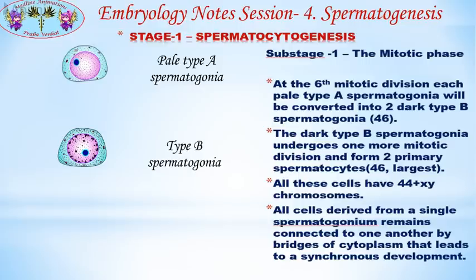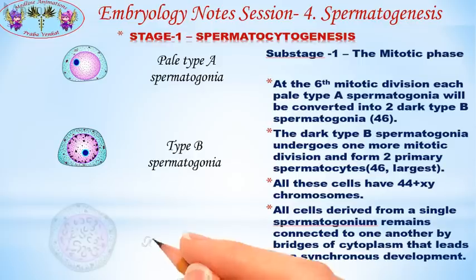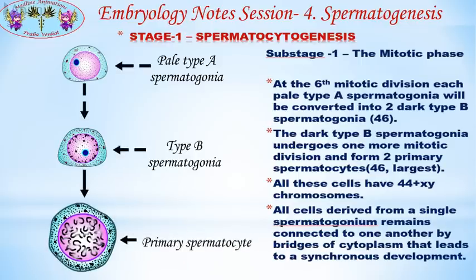At the 6th mitotic division, each pale type A spermatogonium is converted into 2 dark type B spermatogonia. The dark type B spermatogonia then undergo one more mitotic division to form 2 primary spermatocytes. All these cells have 44 + XY chromosomes, and all cells derived from a single spermatogonium remain connected by cytoplasmic bridges, leading to synchronous development.